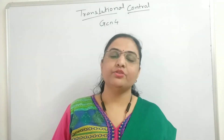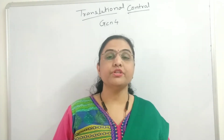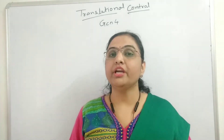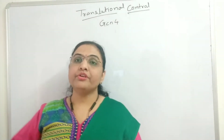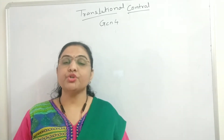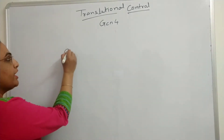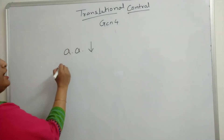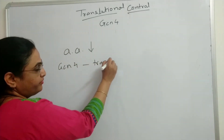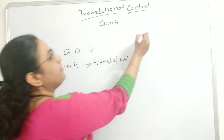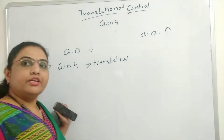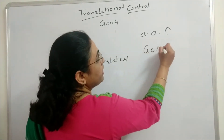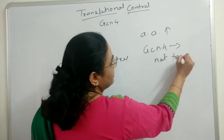The example we are going to study is GCN4, which is a transcriptional activator from yeast. This transcriptional activator GCN4 is involved in the synthesis of amino acids. GCN4 translation occurs when the concentration of amino acids in the cell is lower — that is, under starvation conditions. When amino acid concentration is higher, that is non-starvation conditions, GCN4 will not be translated.